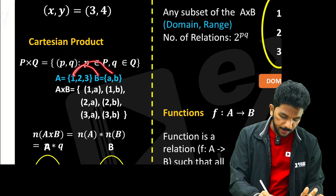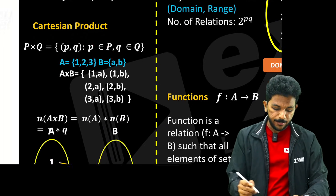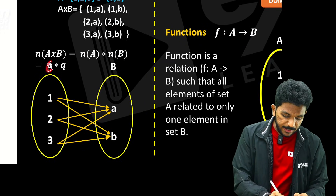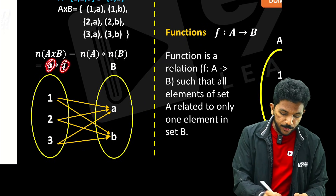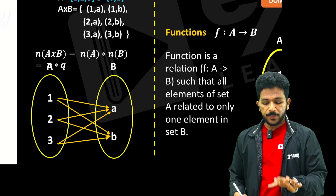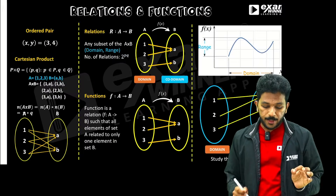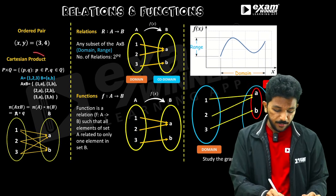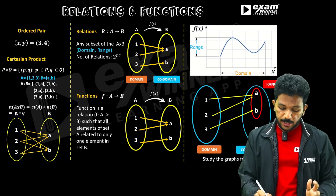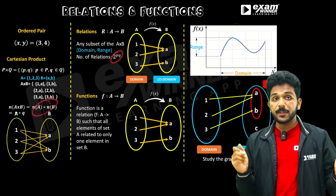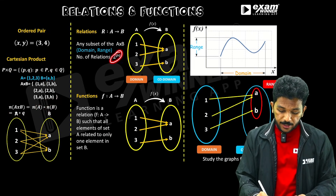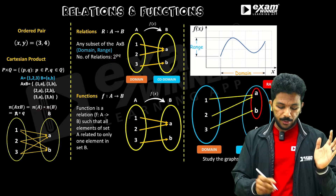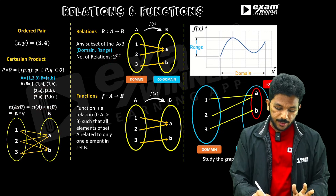For example, the Cartesian product gives pairs: (1,A), (1,B), (2,A), (2,B), (3,A), (3,B). How many elements are there? The first set is P into Q — number of elements of A times number of elements of B. It is a subset of Cartesian product. The number of subsets is 2 raised to PQ, where PQ is the number of elements of the Cartesian product.